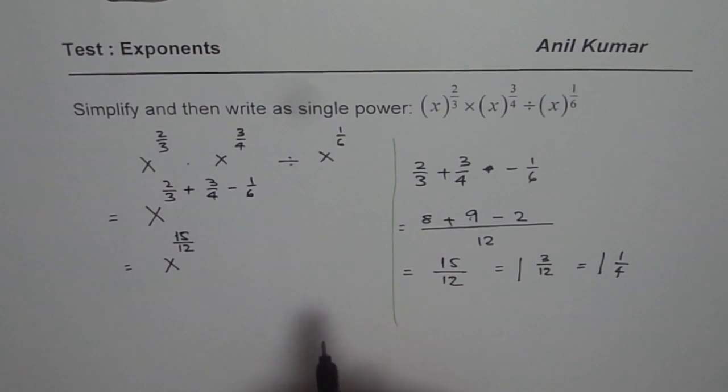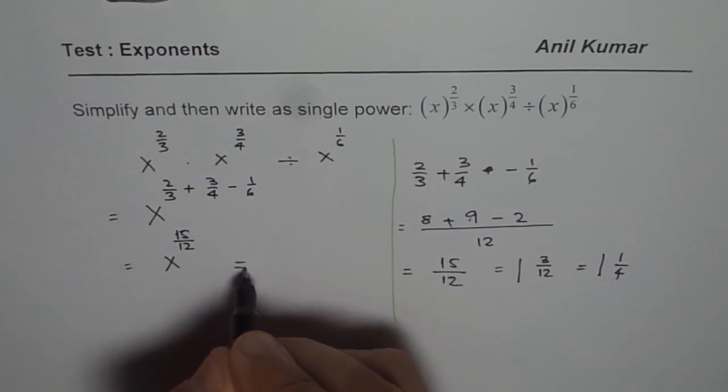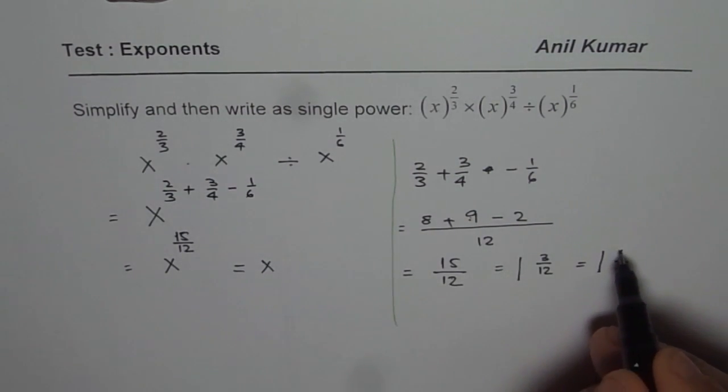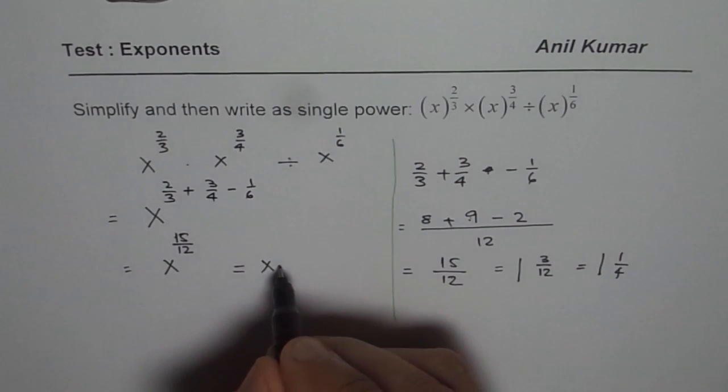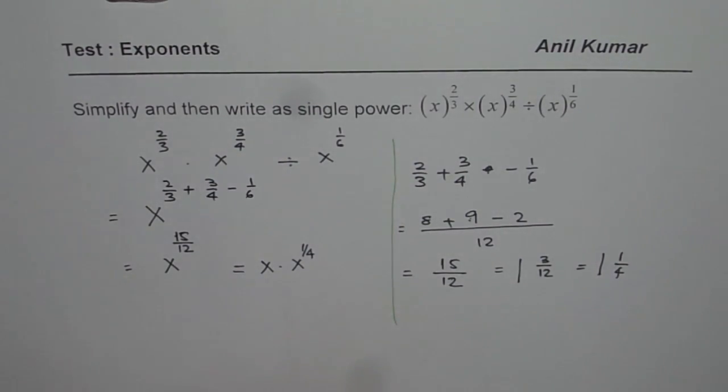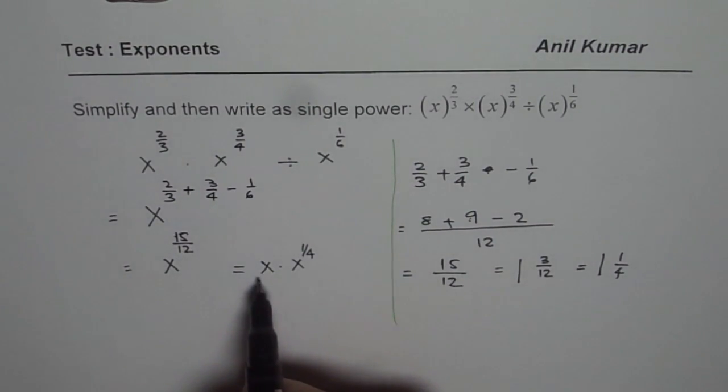Therefore this can also be simplified, and we could actually write this as x to the power of, so it is like 5 over 4. So x times x to the power of 1 over 4. It could be written like this also.